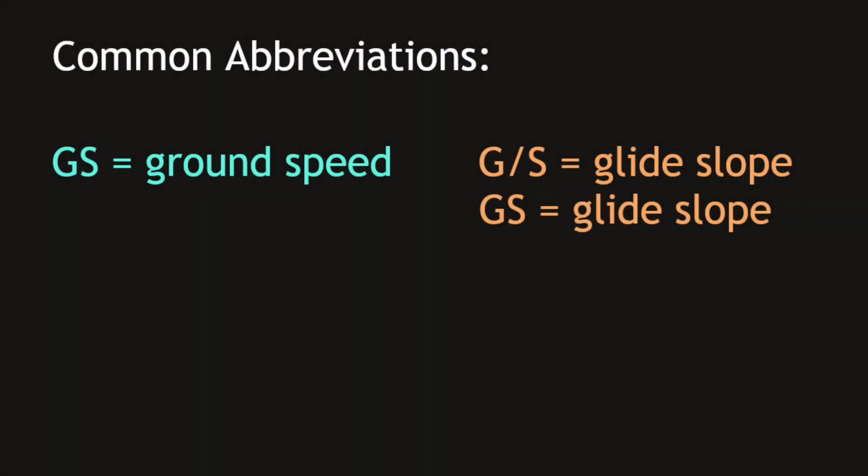In the following questions, ground speed and glide slope information will be very involved. They are often abbreviated in a way that may potentially be confusing. Ground speed is usually abbreviated to GS, which makes sense.